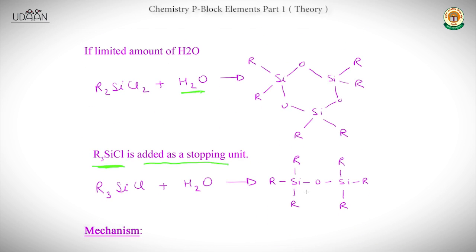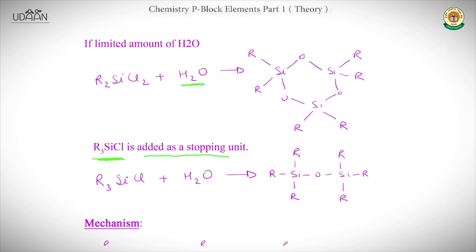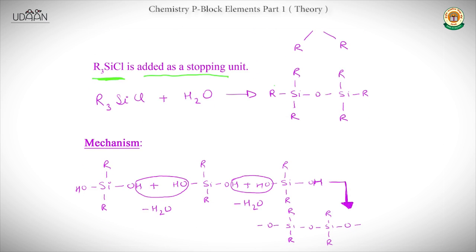If we use a limited amount of H₂O instead of excess water, we get a cyclic structure — called cyclic silicones. To stop the polymerization, we add R₃SiCl, which acts as a stopping unit. Since this unit has no remaining OH groups, no more monomers can be attached, and the chain length is terminated. The basic mechanism involves loss of H₂O between two R₂Si(OH)₂ units to form the Si-O-Si linkage.